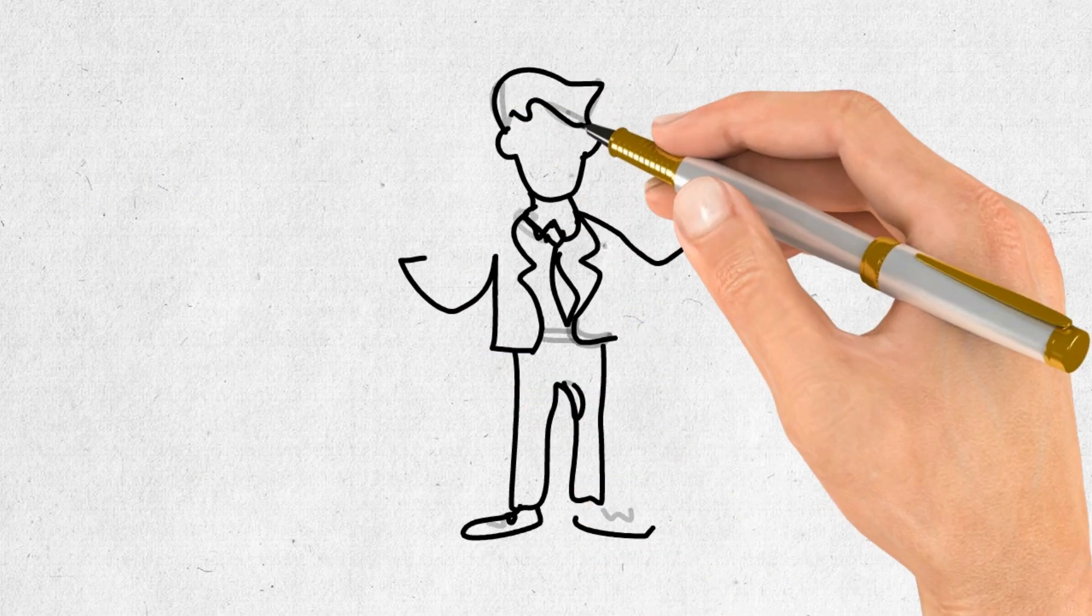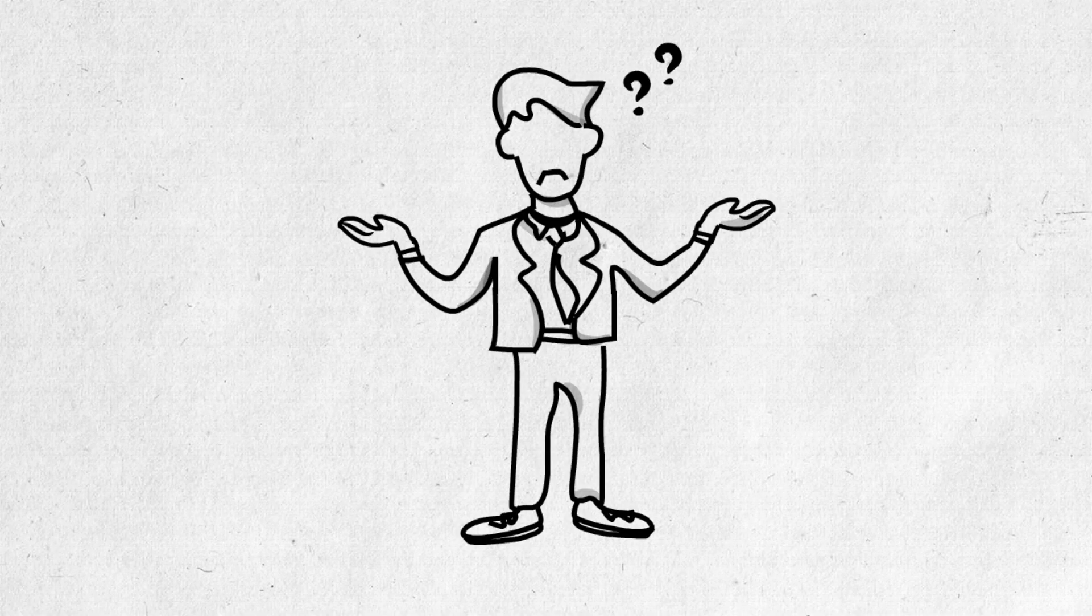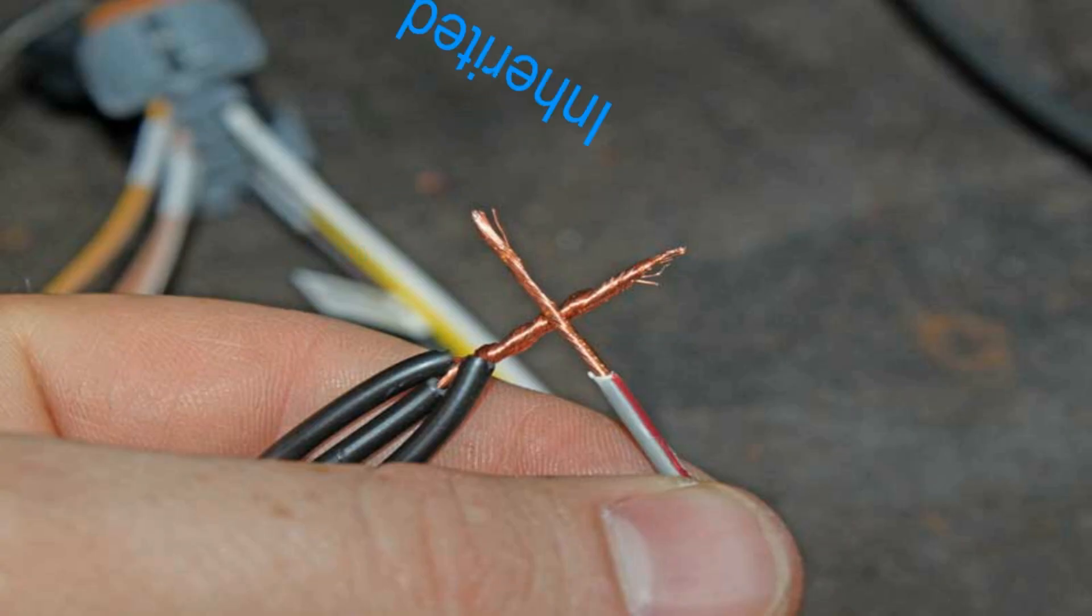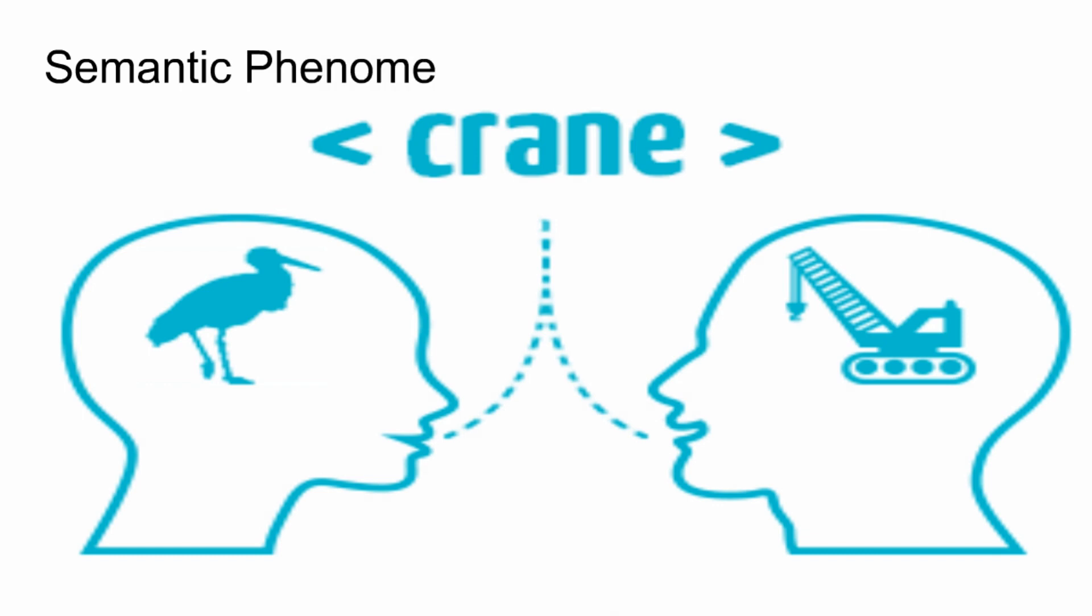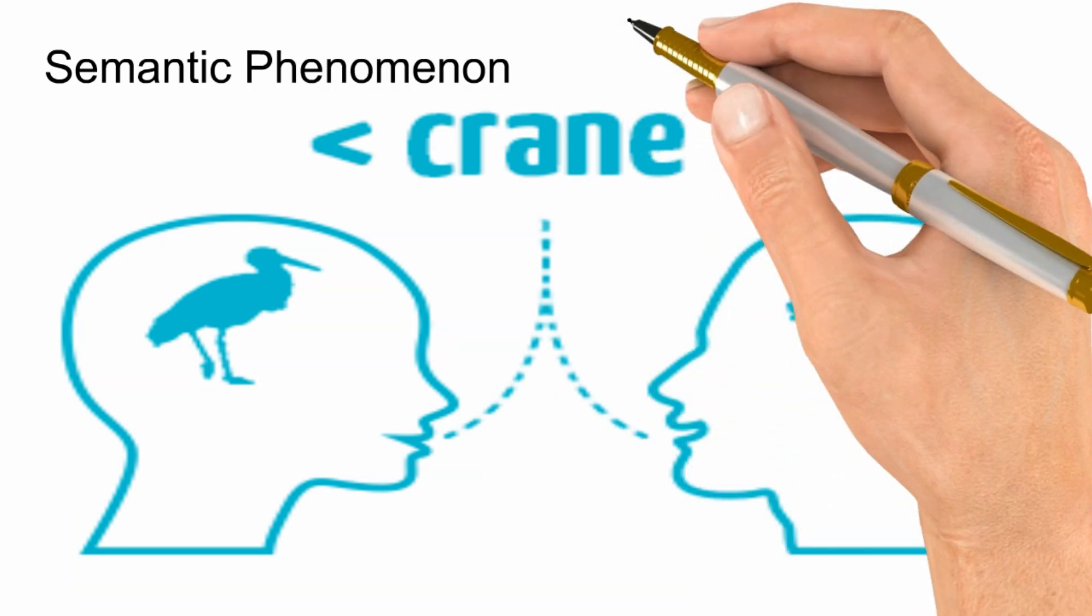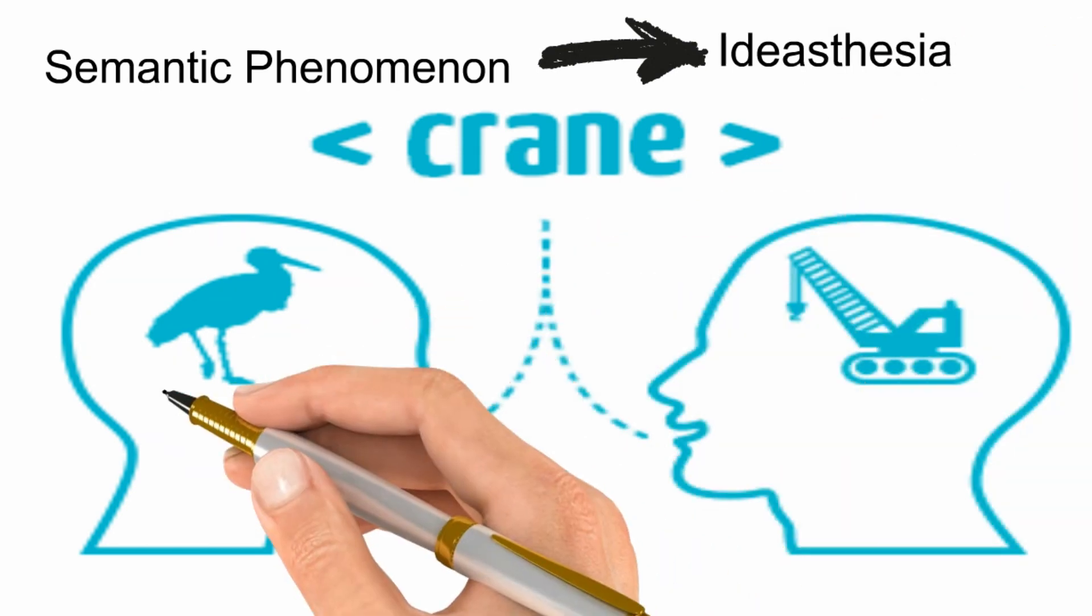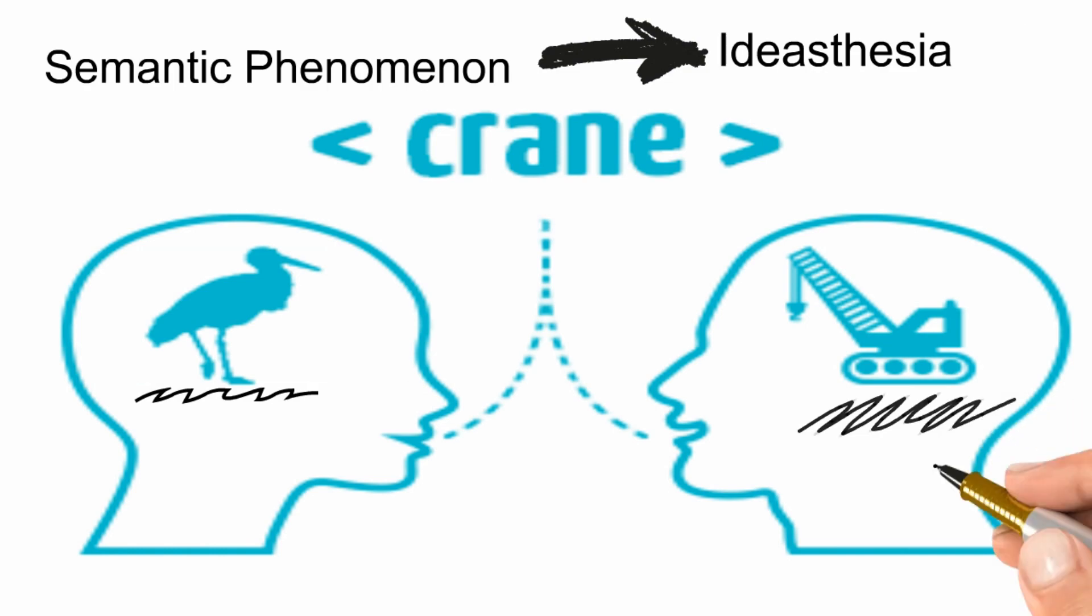But why is all of this happening? Well, it is not well understood as of today. Some say it is because of some cross-wiring between different areas of the brain, which might have been inherited or maybe acquired after a trauma or a stroke. On the other hand, a relatively new hypothesis mentions synesthesia to be a semantic phenomenon. This is called idiostesia, in which, for example, seeing a bird brings the idea or imagination of a crane in your mind.